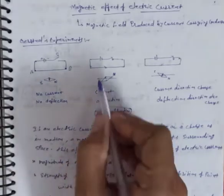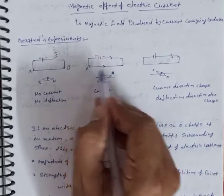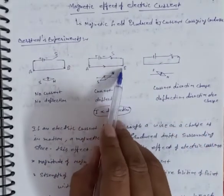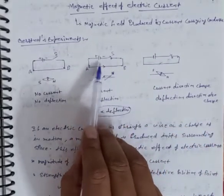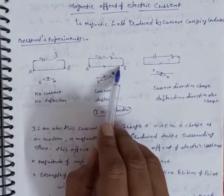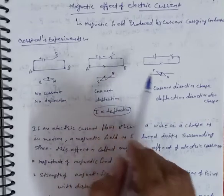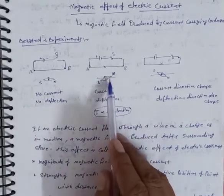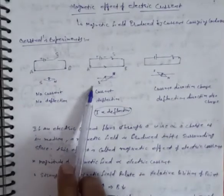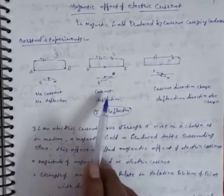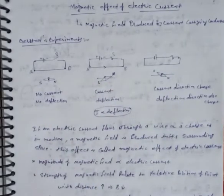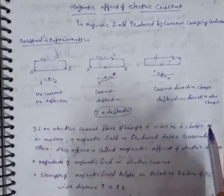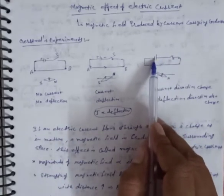In the next case, when you connect the battery and close the switch, the circuit is completed and current flows from the positive to the negative terminal through the conducting wire. Due to the flow of that current, there is a deflection in the needles of the compass — a deflection due to the current in that conductor.